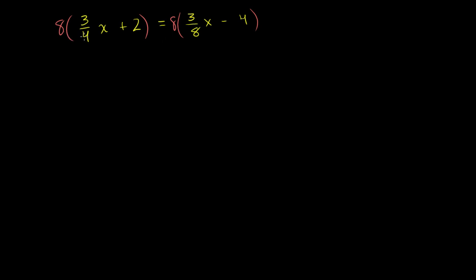So 8 times three-fourths, that's the same thing as 8 times 3 over 4. That's the same thing as 8 times 3 over 4, which is equal to 8 divided by 4 is just 2. So it's 2 times 3, which is 6. So the left-hand side becomes 8 times three-fourths x is 6x. And then 8 times 2 is 16. You have to remember, when you multiply both sides or a side of an equation by a number, you multiply every term by that number. So you have to distribute the 8.